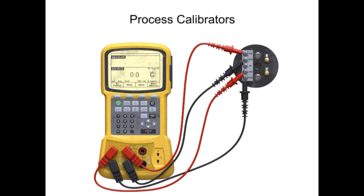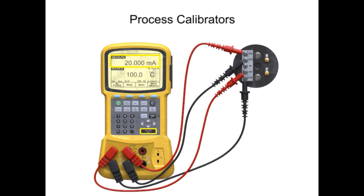With a transmitter range of 4 to 20 milliamps, the expected output at the low end of the temperature range of 0 degrees Celsius is 4 milliamps. At the high end of the temperature range of 100 degrees Celsius, the expected output of the transmitter is 20 milliamps.